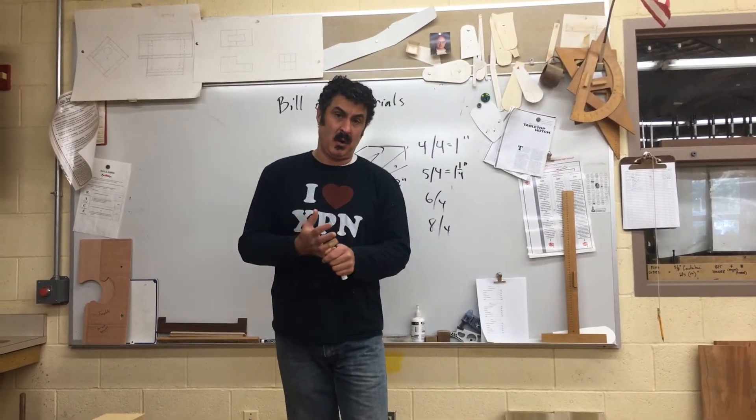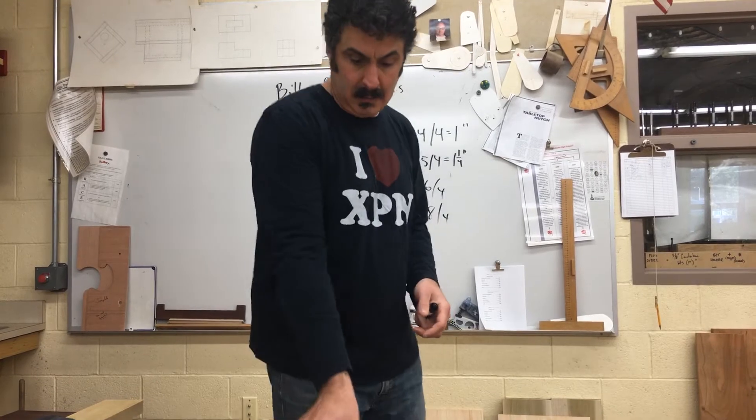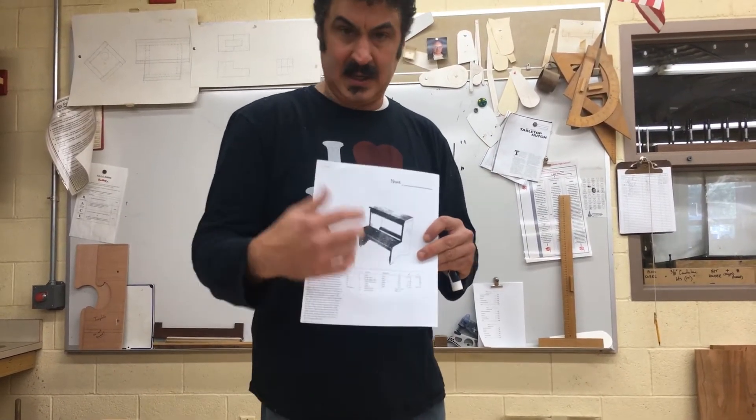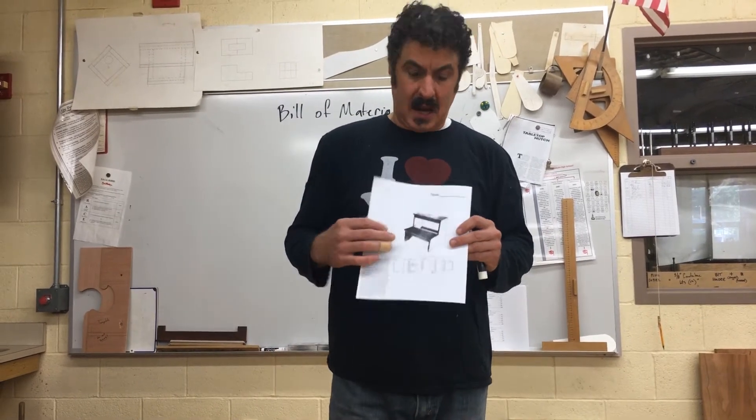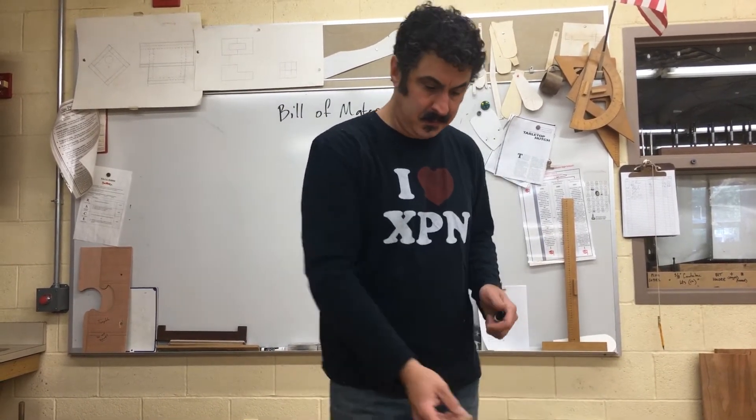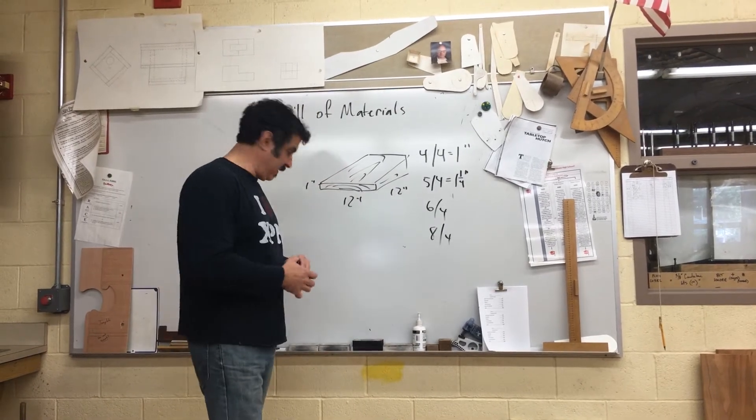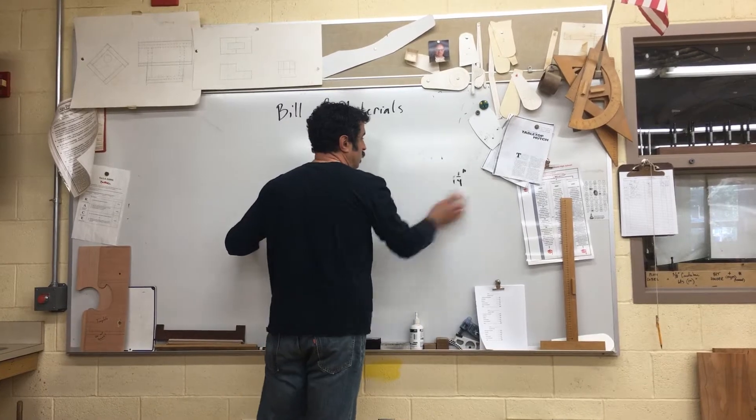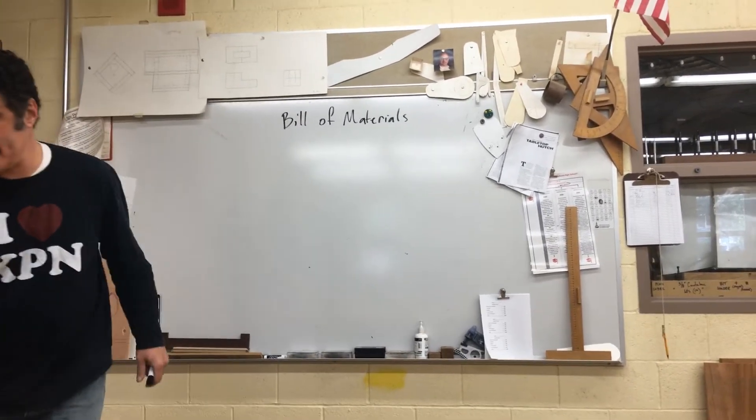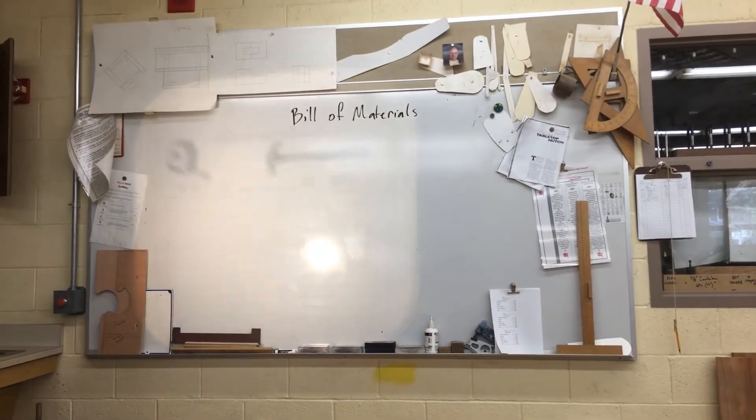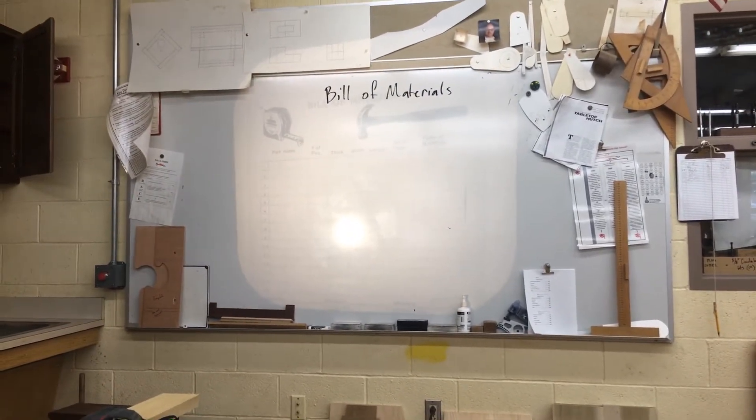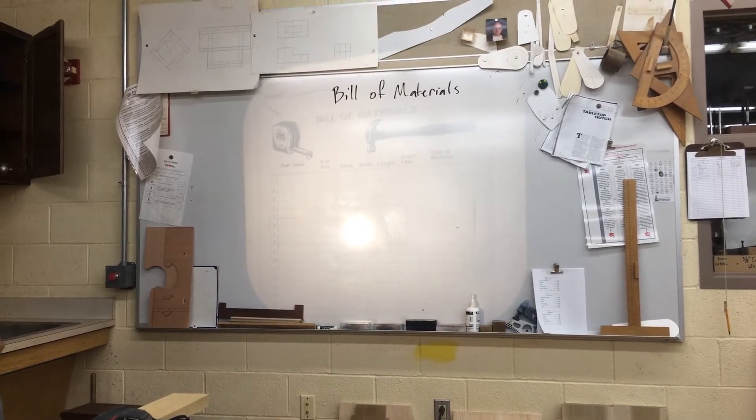For us to determine what it's going to cost to buy the materials that we want, we have to go ahead and look at our bill of materials, which will be right here. So our plan is to list all the different pieces to make this project and list all our dimensions. So how do we convert that to board feet?